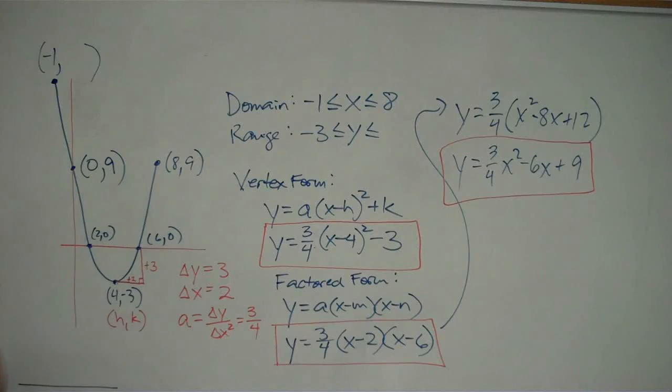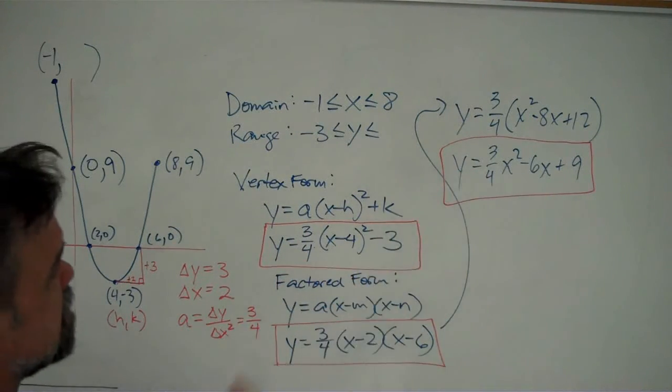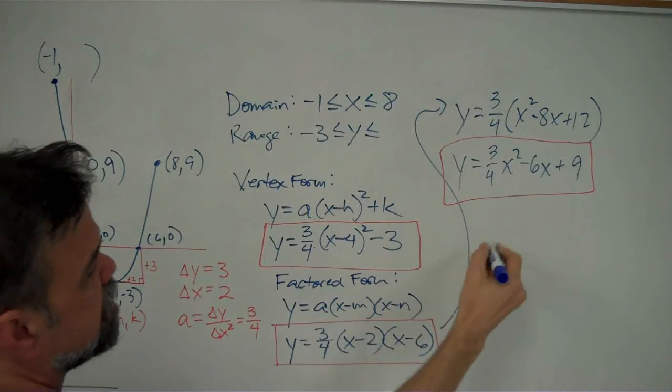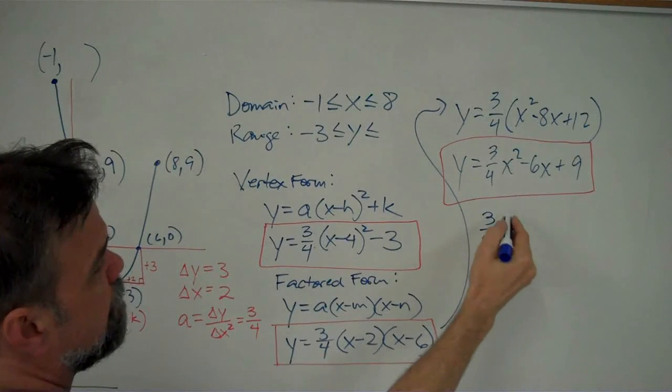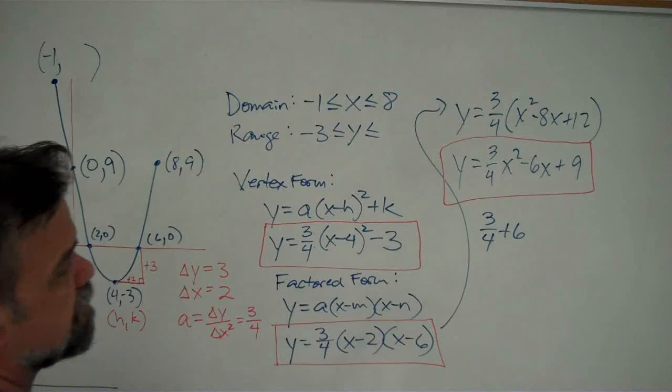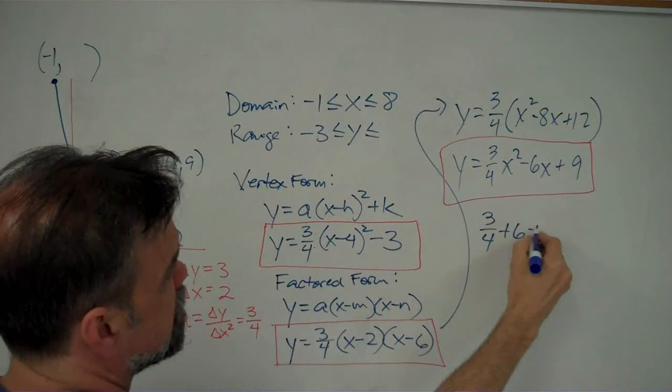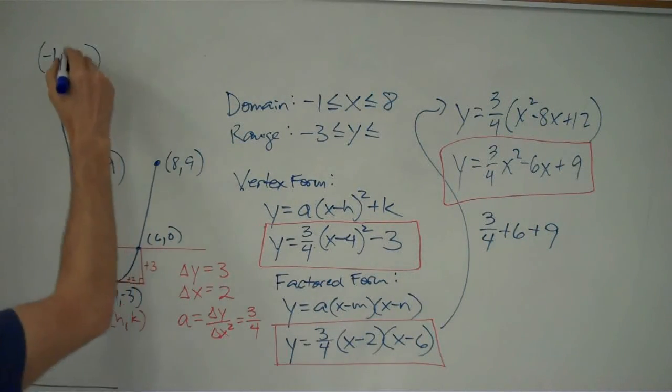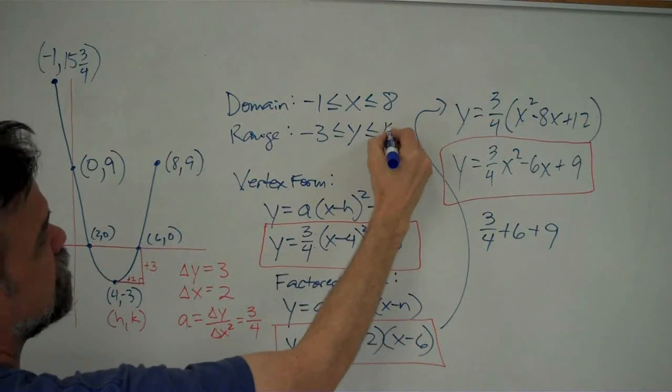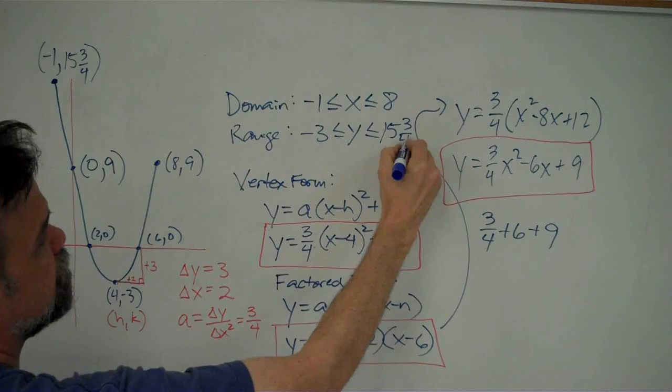So, I have this negative 1 here, and I want to replace x with negative 1 in any of these equations, and I'm going to go for this one because it's the easiest one, I think. 3 fourths times negative 1 squared is 3 fourths times 1, minus 6 times negative 1 is just plus 6, plus 9, that's 15 and 3 fourths. And so, that's what my range is. My range goes from negative 3 up to 15 and 3 fourths.